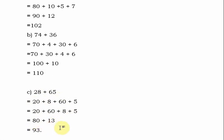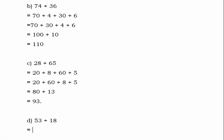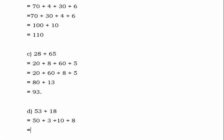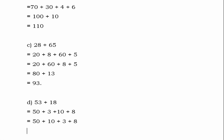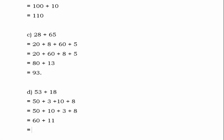80 plus 13 gives the answer 93. The next question is 53 plus 18. 53 can be written as 50 plus 3, and 18 can be written as 10 plus 8. Write the tens together: 50 plus 10, plus the ones: 3 plus 8. 50 plus 10 is equal to 60, and 3 plus 8 gives you 11. Now, what is 60 plus 11?